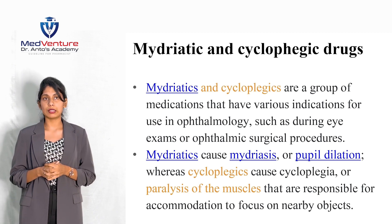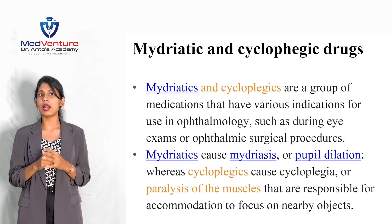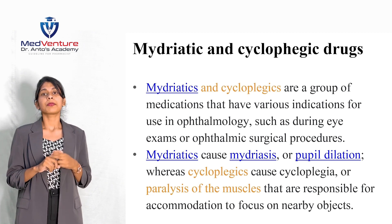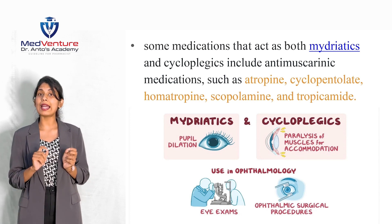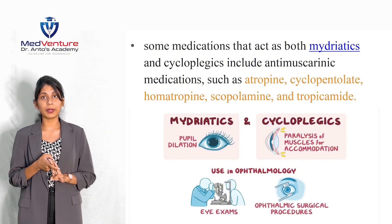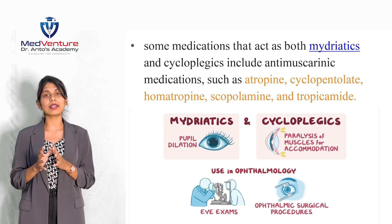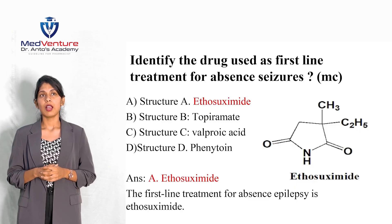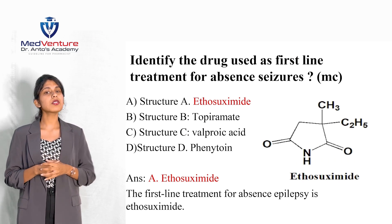In ophthalmology, medications that can act both as mydriatics and cycloplegics include anti-muscarinic agents such as atropine, cyclopentolate, homatropine, scopolamine, and tropicamide. These anti-muscarinic agents are examples of mydriatic and cycloplegic drugs.